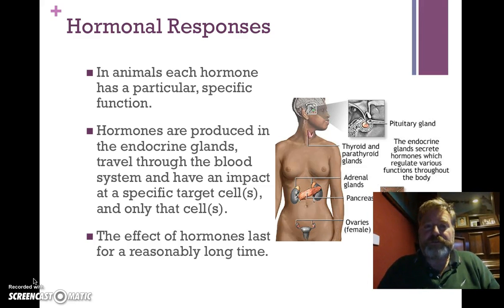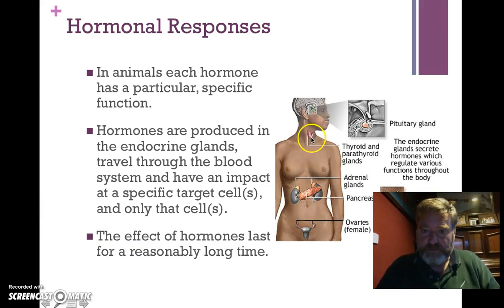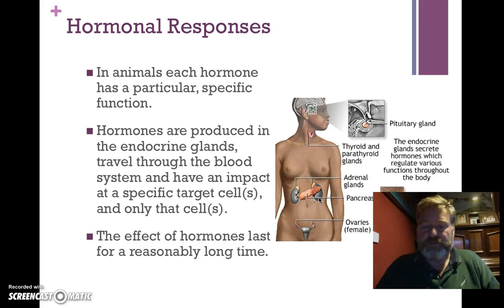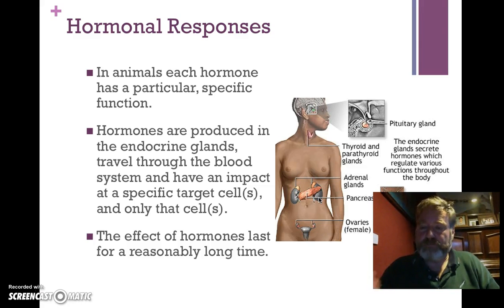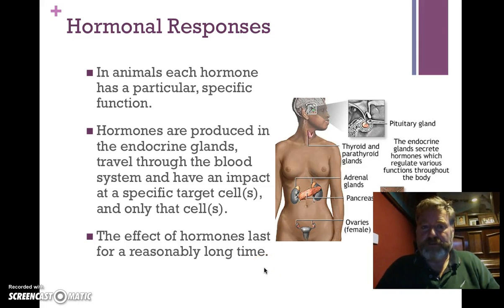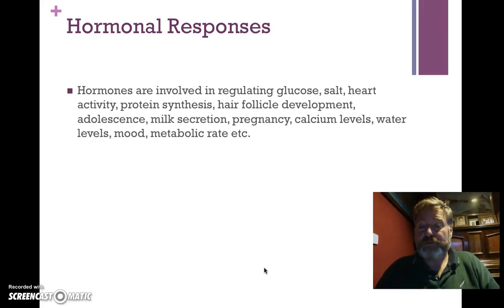Negative feedback systems are really important. We have two systems for doing this: hormones and nerves. In animals, each hormone has a relatively specific function. Somewhere in the body a hormone will be released — you might look at the thyroid and parathyroid glands — and that hormone may trigger a change causing the kidneys to make more or less urine. Hormones are proteins with a specific site that connects chemically to a specific site on the organ or gland it works on.